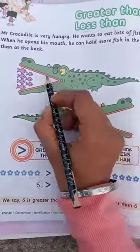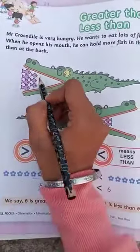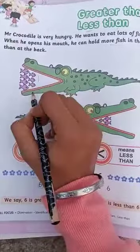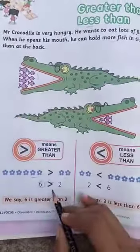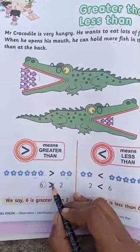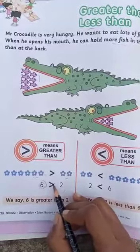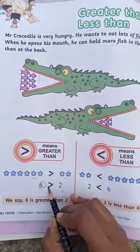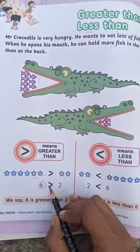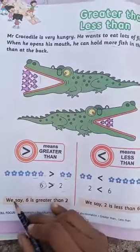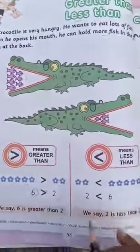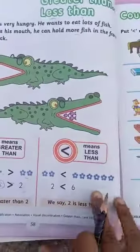Just like Mr. Crocodile has more fish, so his mouth is open. Similarly, when someone has a big number, our mouth is always open. It means this sign will look like this. We will say that 6 is greater than 2.